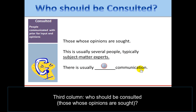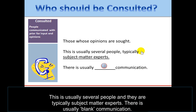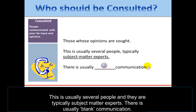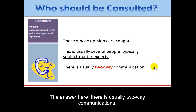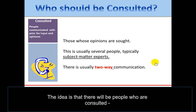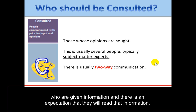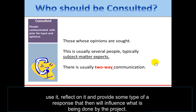The third column: who should be Consulted? These are people whose opinions are sought. This is usually several people and they are typically subject matter experts. There is usually two-way communication. The idea is that these people are given information, and there is an expectation that they will read it, use it, reflect on it, and provide a response that will then influence what is being done by the project.